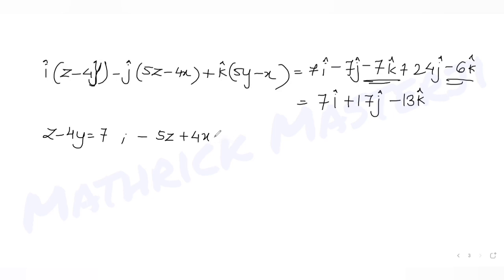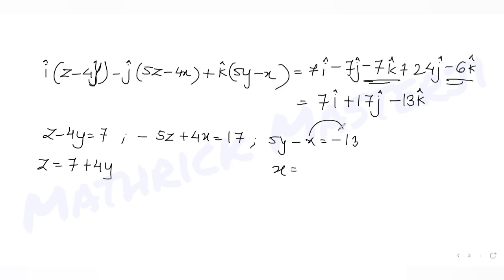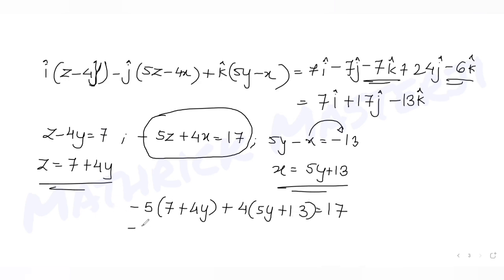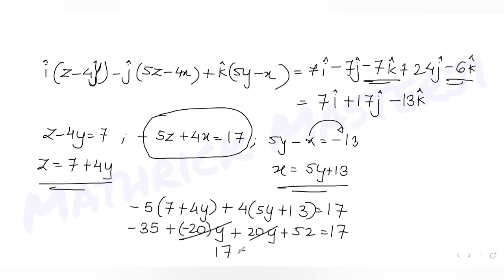Solving these three equations, we get z = 7 + 4y and x = 5y + 13. Substituting both into the third equation gives 17 = 17, which is an identity. So we cannot determine unique values of x, y, z from this alone and need one more condition.